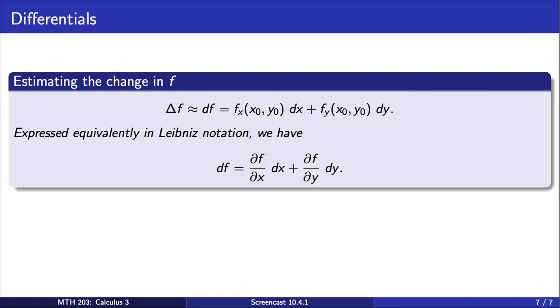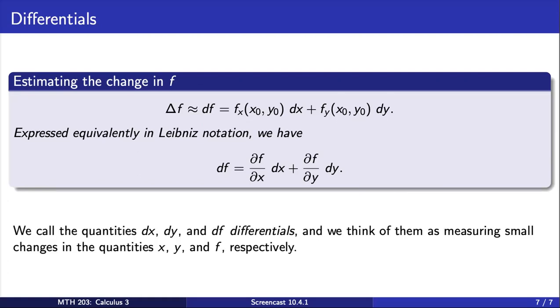While the linearization enables us to estimate values of the function for points near the base point, sometimes we are more interested in the change in the function as we move from the base point to another point. A simple way to estimate the change in a function f given by delta f here is to use the differential, df, which represents the change in the linearization. We call the quantities dx, dy, and df differentials, and we think of them as measuring small changes in the quantities x, y, and f.